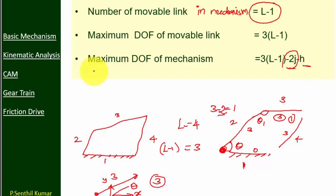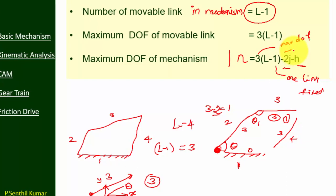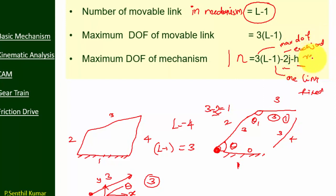So the maximum degree of freedom of a mechanism is n = 3(l − 1) − 2j − h. To remember: the '3' represents maximum degrees of freedom of each link; '−1' means one link is fixed; '−2j' means each joint reduces two degrees of freedom; and 'h' represents higher pairs. This is Grashof's criterion for a planar mechanism.